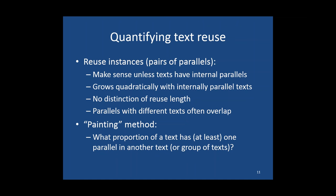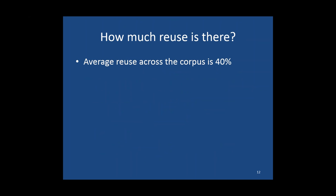Instead, I'm using what I call the painting method, which is quite easy to understand. The idea is to count what proportion of a text has some parallel with some other text we're comparing it with, or with the entire corpus. It's called the painting method because you imagine having a printed copy of the text and for every character, if it belongs to a parallel with some other text, you draw a red line under it. At the end, you see what proportion of your text is underlined. This gives an intuitive method of quantifying how much text reuse there is. It turns out that for the Pre-Qin and Han corpus, the overall rate is about 40%, which is very high.